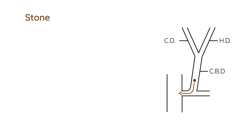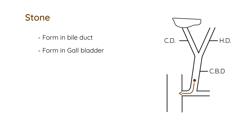There are two types of stones: ones that form in the actual ducts themselves, and others that form in the gallbladder and then migrate down. The ones that form in the gallbladder and migrate to the bile ducts are the most common — about 85% of all stones are that type. They usually pass into the duodenum, but if they get stuck, that leads to cholangitis.